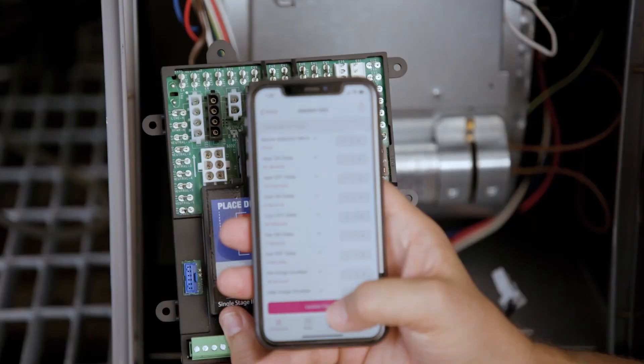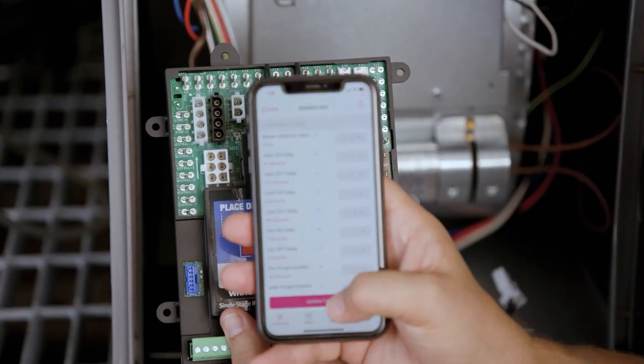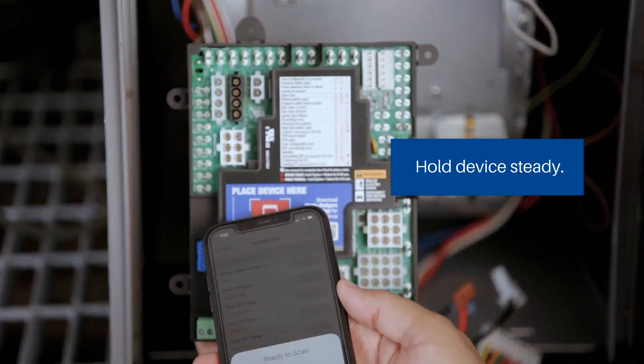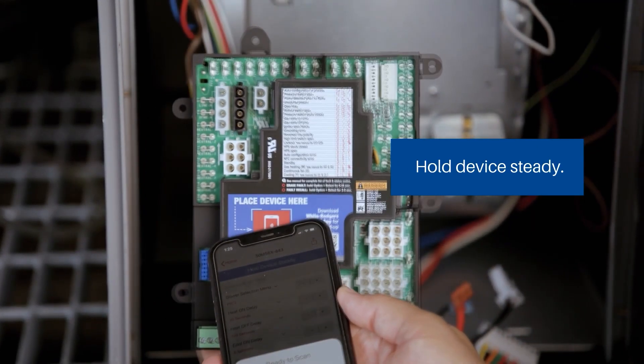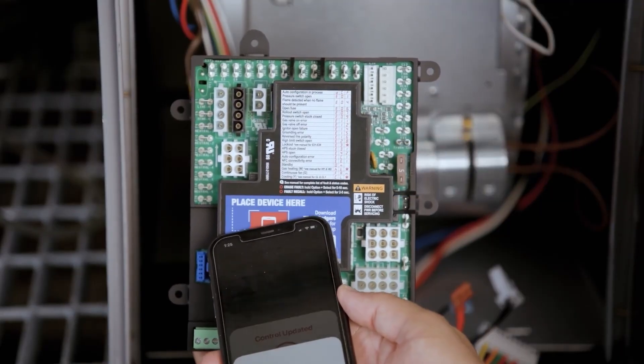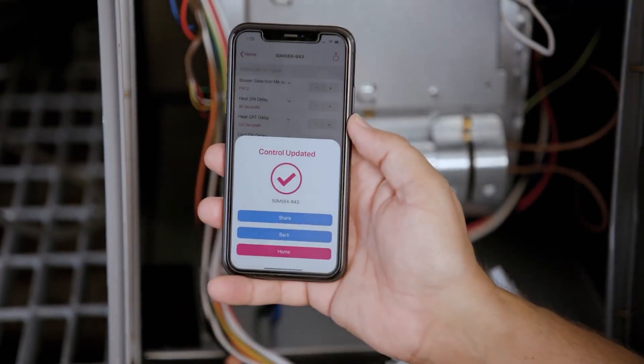Note that connecting to the board, updating configurations, and clearing codes from the Connect app can all be done unpowered, but you'll still have to upload to the board for the changes to take effect.